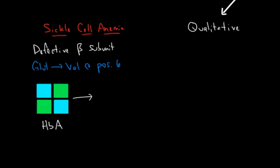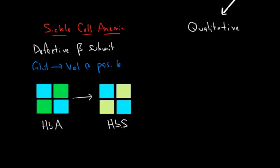But what happens in sickle cell anemia? Well, let's represent it like this, and this variant of hemoglobin is called HBS, and it's made of two alpha subunits, two normal alpha subunits in blue, and two defective beta subunits in yellow.